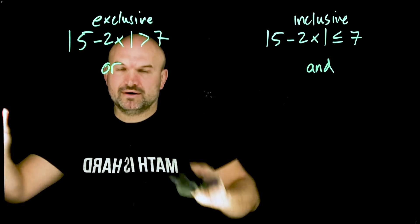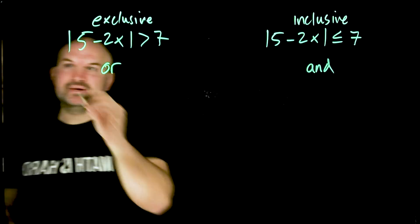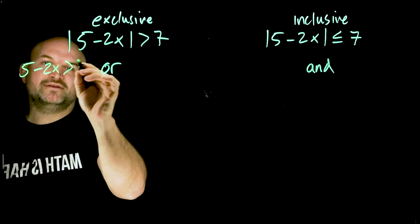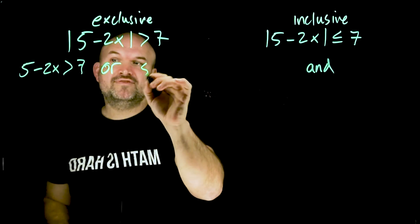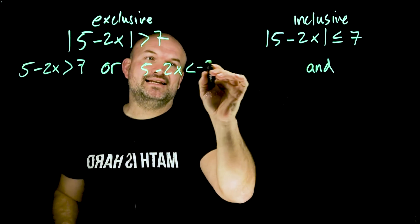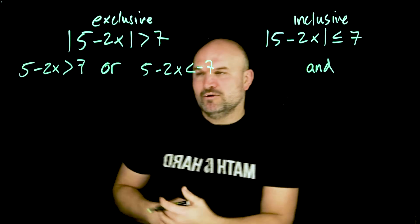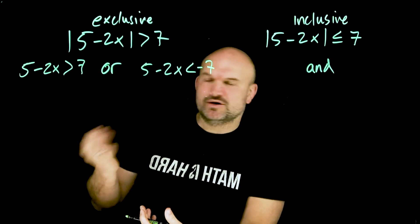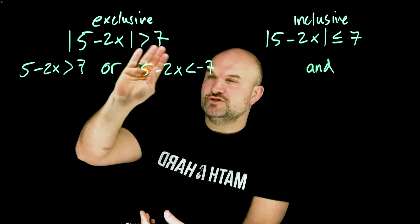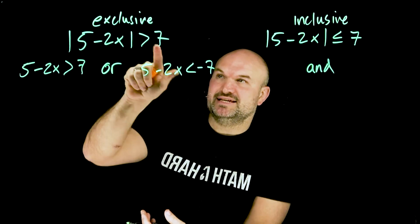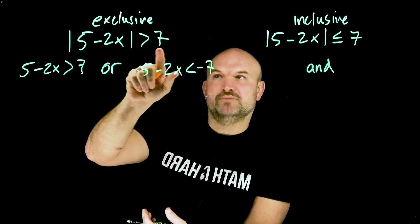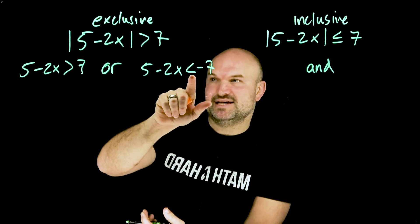In this first one, we have 'or', and that's going to be the word I use. So: five minus two X can be greater than seven, or five minus two X can be less than negative seven. Just remember with inequalities, when we multiply or divide by a negative on both sides, we have to flip the inequality. So when you take the negative side, you can think of it as multiplying by negative — that's going to reflect the sign.